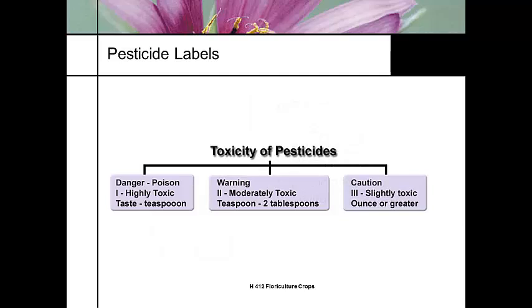The label will relate the toxicity of your pesticide. In the United States, we use three toxicity levels: one, two, and three. Toxicity one is danger, two is warning, and three is slightly toxic, or caution.